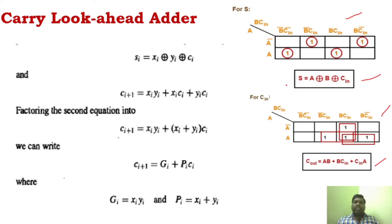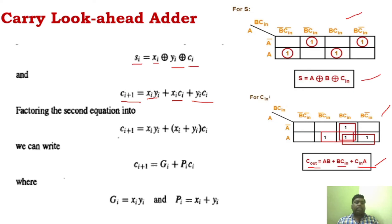Instead of A, B, C, we write it as Xi, Yi, and Ci — where Ci is the carry input, Si is the sum, and i represents the present bit position. The carry out equation for the full adder is written as Ci+1, since carry-in is Ci and carry-out is Ci+1. From this carry-out equation, the carry look-ahead adder equation is generated.